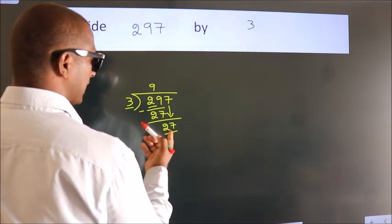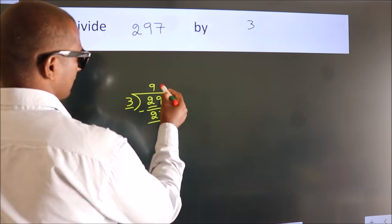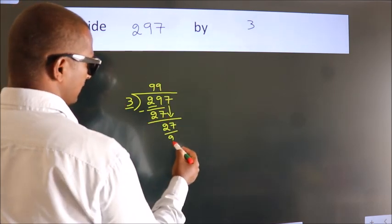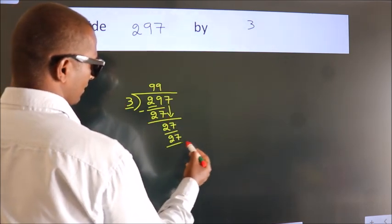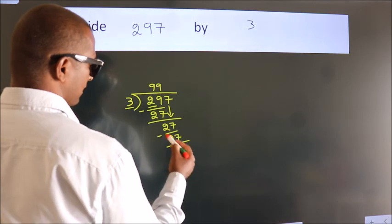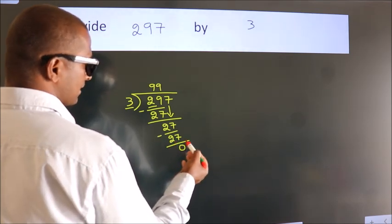When do we get 27 in the 3 table? 3 nines is 27. Now we subtract and get 0.